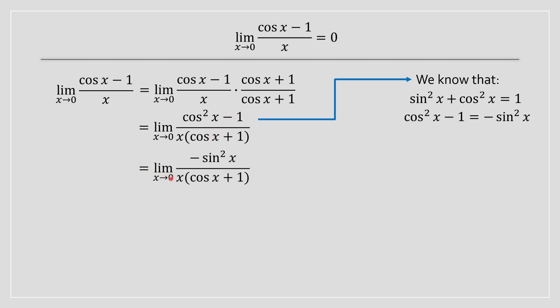So once you have done that, what you're going to have to do at this point is split this fraction into two. You're going to have the first fraction, which is sin x divided by x, and then the other secondary fraction, which is negative sin x divided by cos x plus 1.